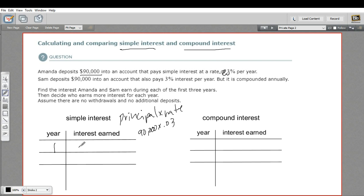So after the first year, Amanda gets 2,700. And for Amanda, the rest of this is really easy to calculate because the interest is always the same. You take 3% of that principal amount, that first amount that you put in. So at the end of three years, she gets that much more money in her account.